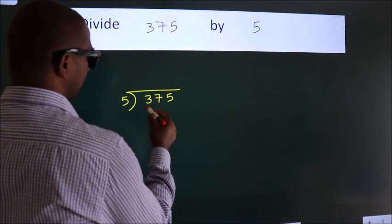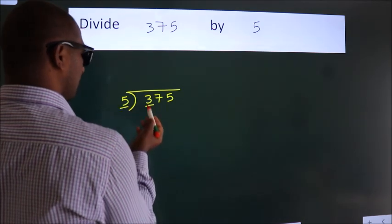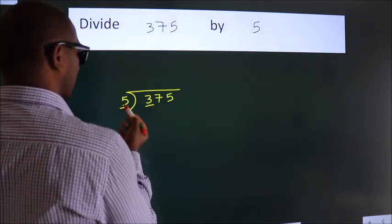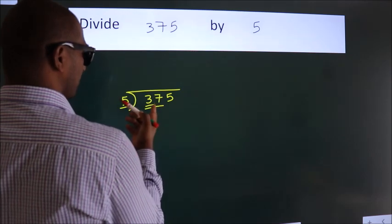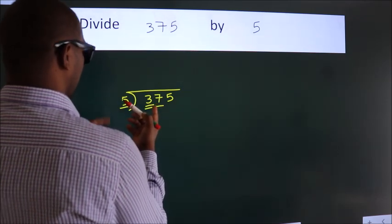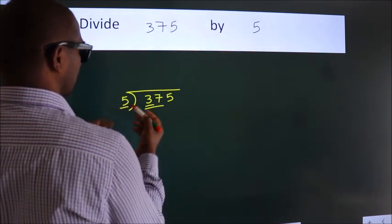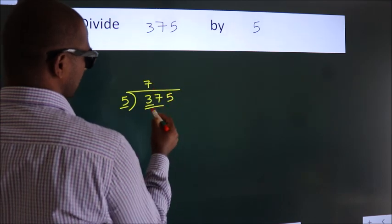Next, here we have 3, here 5. 3 is smaller than 5. So we should take 2 numbers, 37. A number close to 37 in 5 table is 5 7s 35.